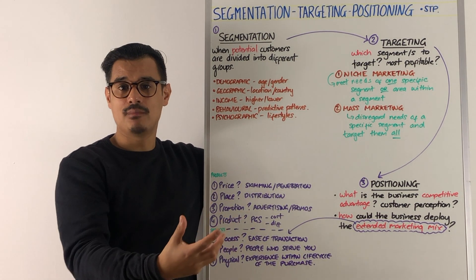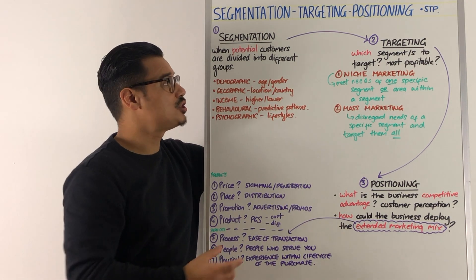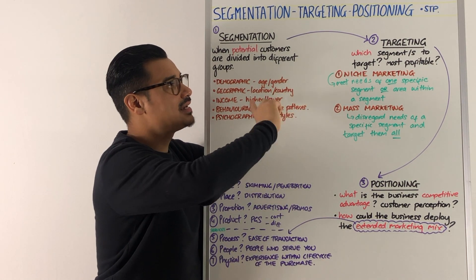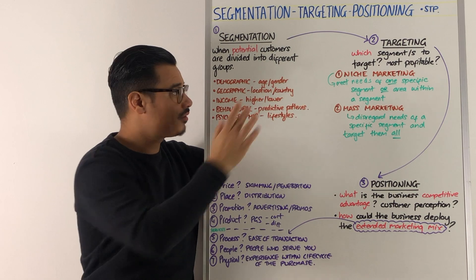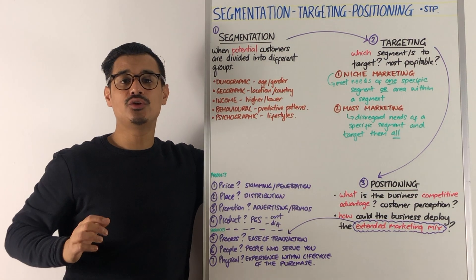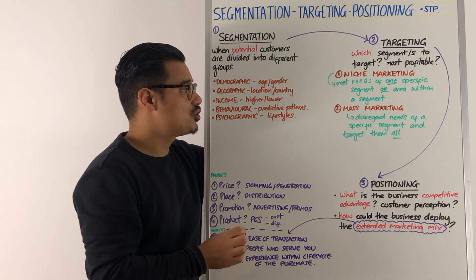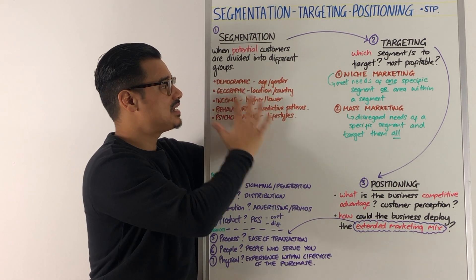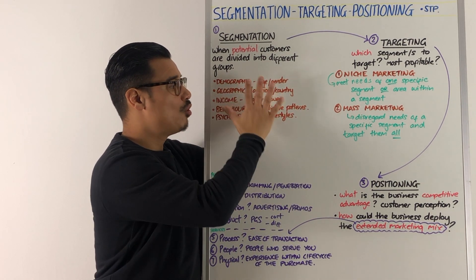The next stage that a business might go through in their marketing procedure is targeting. So targeting is: which segment should they target? Should they use a mass marketing approach where they disregard any particular segment and target them all?